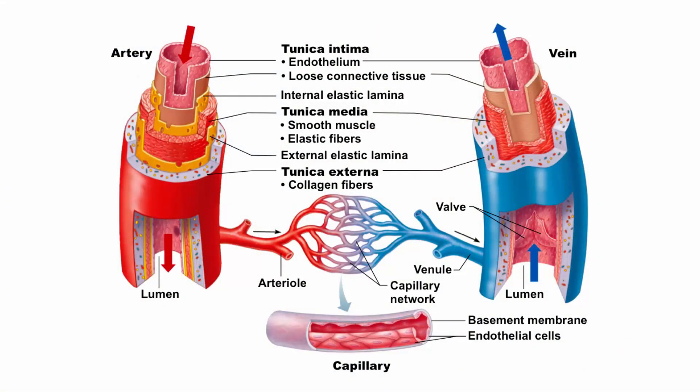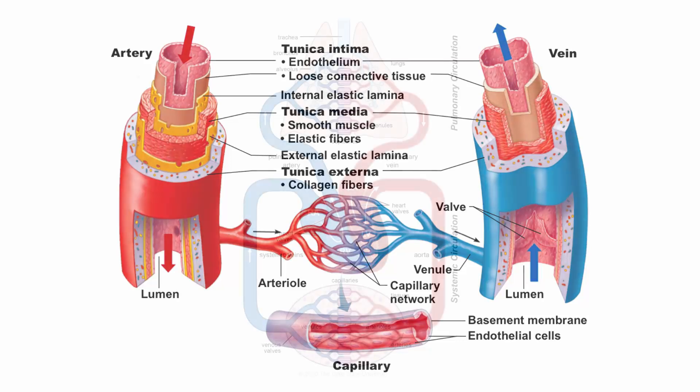There are three kinds of blood vessels: arteries, veins, and capillaries. Each kind of blood vessel has a different structure and function in the body. The blood vessels run from the heart to the lungs, around the body, and back to the heart. Blood always moves along the same pathway in the blood vessels.